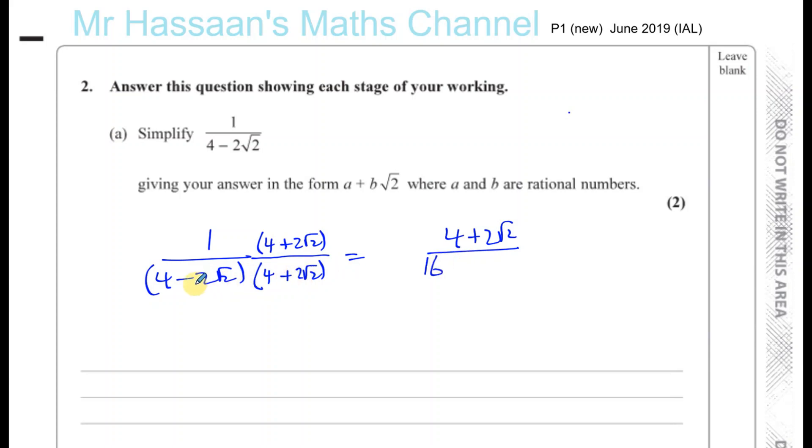And the last term will be minus times minus, which is minus. You have 2 times 2, which is 4. And √2 times √2, which is 2. Okay, so you end up with 4 plus 2√2 over 16 minus 8, which is 8. So 4 plus 2√2 over 8.